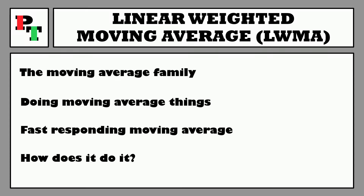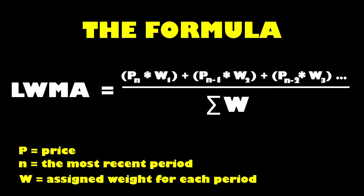How does it do what it does though? Let's check out the formula and find out. You can see we're looking at a division-based formula and if we focus on the top half of that division we'll need to look at the calculations inside the brackets. So first we take the price of the latest period and multiply it by the assigned weight for that period. The weighting for the first period would be equal to the amount of periods selected for the input. So if we had an input of 10 periods then the weighting score would also be 10.